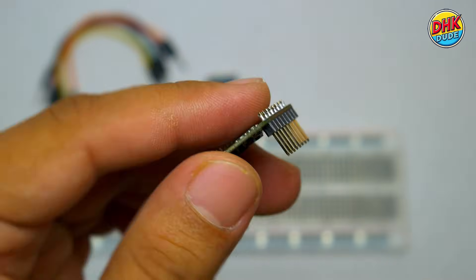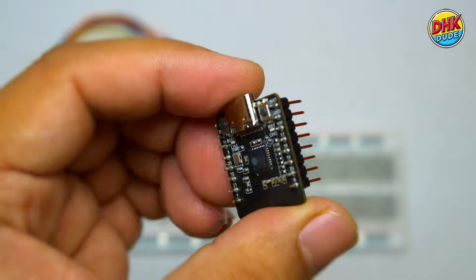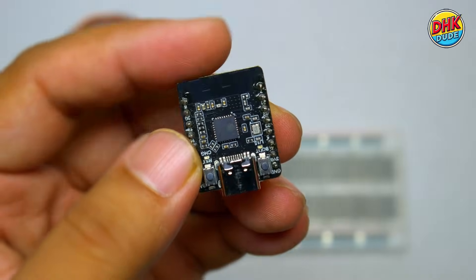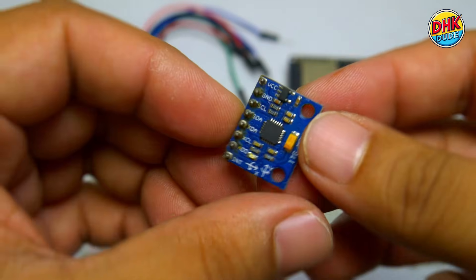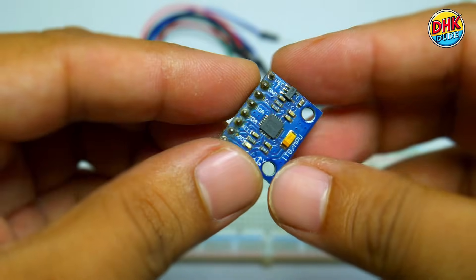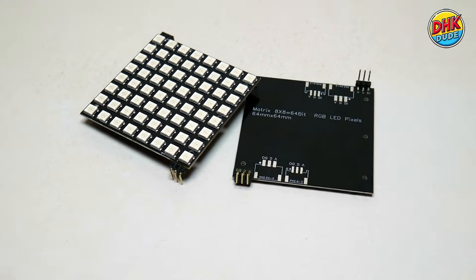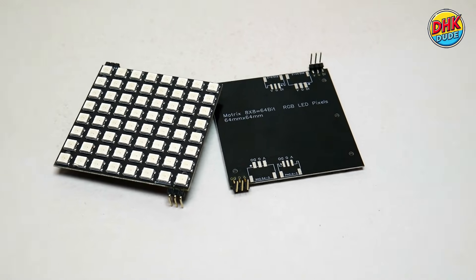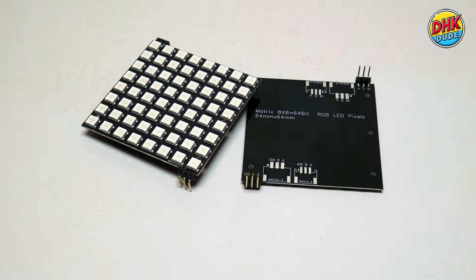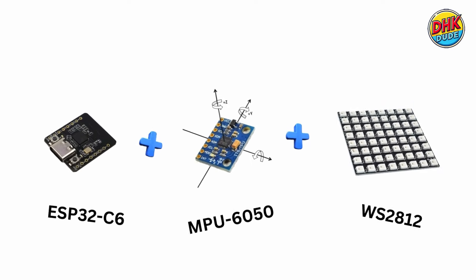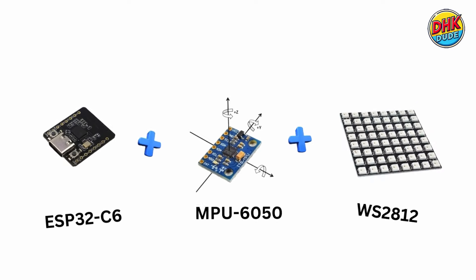For this upgraded version of the R-Glass, we are using the ESP32C6 board as the main controller, paired with the MPU6050 motion sensor to detect the orientation of the R-Glass. The visuals are handled by two WS2812 LED matrices, which create the flowing sand animation. These components together form the complete smart, motion-responsive LED R-Glass.